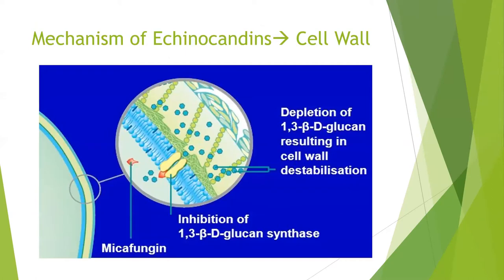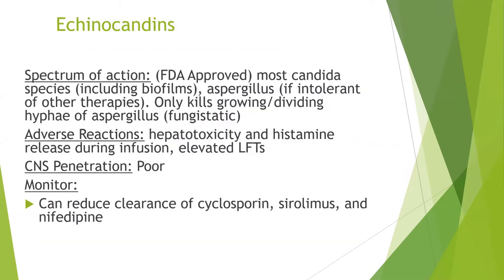Echinocandins work on the cell wall, a different site than azoles and polyenes. They inhibit beta-D-glucan synthesis by inhibiting the enzyme 1,3-beta-D-glucan synthase, which is essential to cell wall integrity; once inhibited, the cell wall becomes permeable, leading to cell death. Echinocandins are primarily used for candida infections, with most candida species susceptible. They have only fungistatic activity against aspergillus and should never be used for aspergillus treatment alone. Primary concerns include hepatotoxicity, histamine release during infusion, and elevated transaminases. They have very poor CNS penetration and can reduce clearance of cyclosporine, sirolimus, and nifedipine.